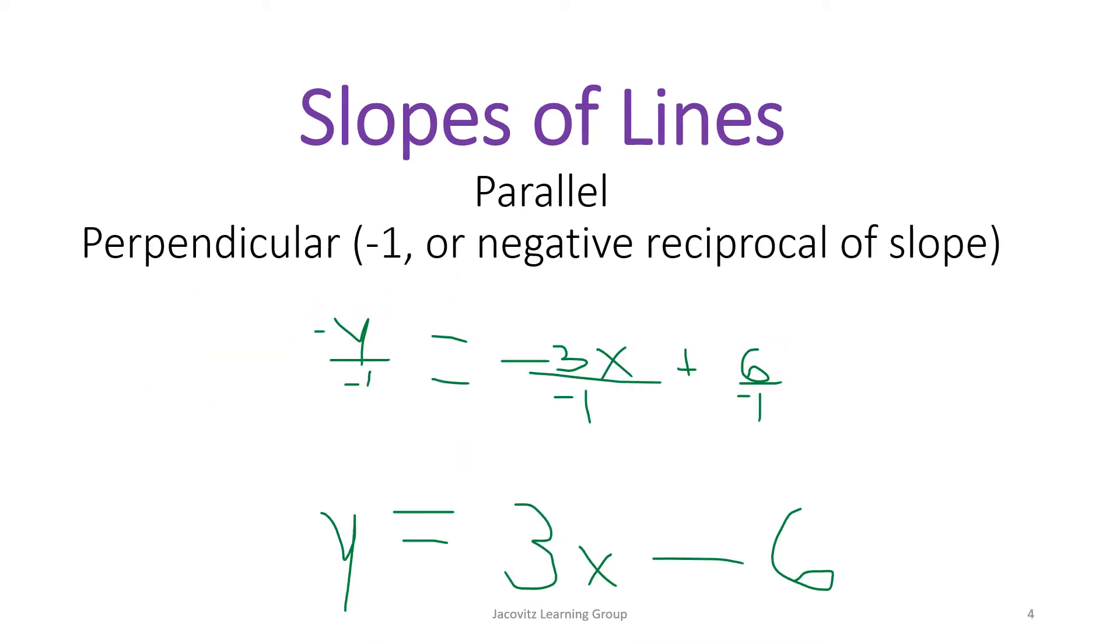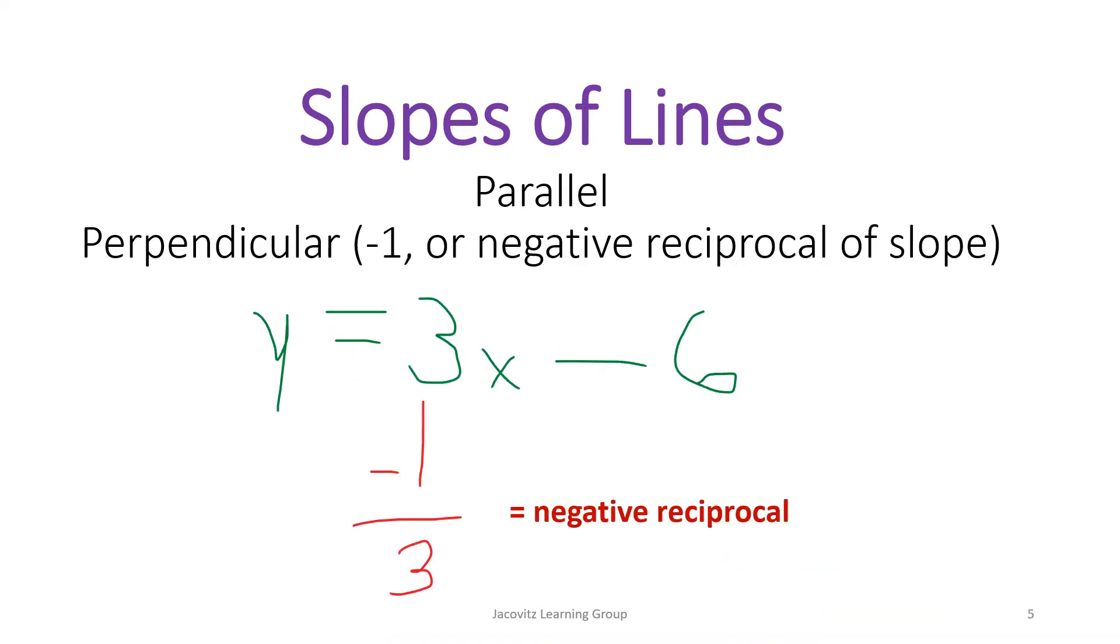Here is your slope intercept form where m is 3, x is here, and this is plus negative b. That's the first concept. If you were looking for perpendicular, the negative of that would be negative one-third. So you're looking for something where your slope is going to be negative one-third.